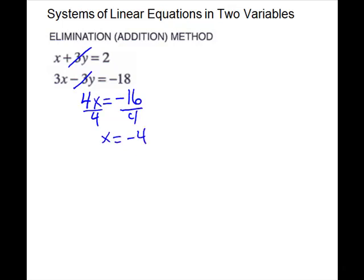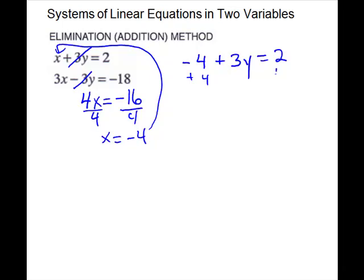Then we substitute the x back in to solve for y. You can substitute it into either equation. I'll substitute it here, so I have negative 4 plus 3y equals 2. Add 4 to both sides, so I have 3y equals 6. Divide by 3, y equals 2.